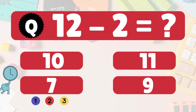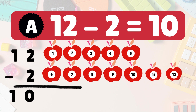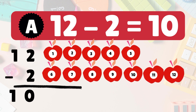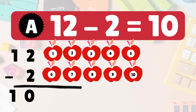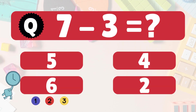Next: 12 minus 2 equals what? 12 minus 2 is 10. Here we have 12 apples. Take 2 away. 10 apples left: 1, 2, 3, 4, 5, 6, 7, 8, 9, 10. So 12 minus 2 is 10. Next: 7 minus 3 equals what?